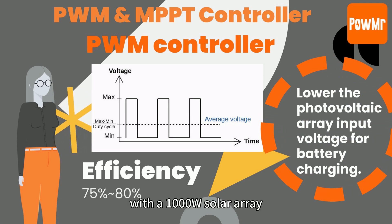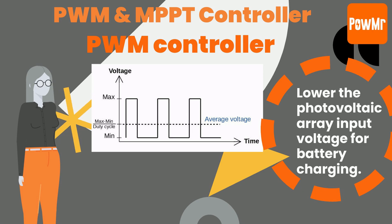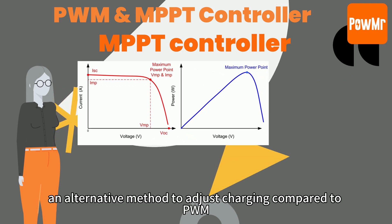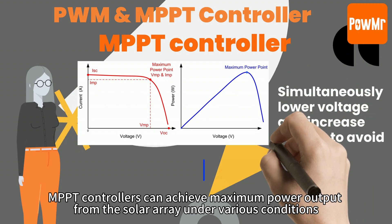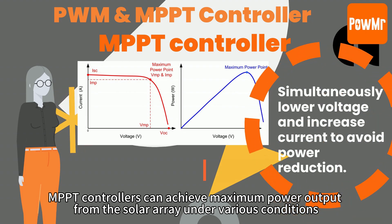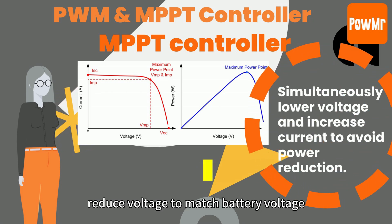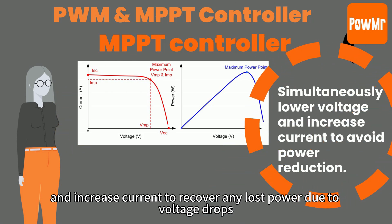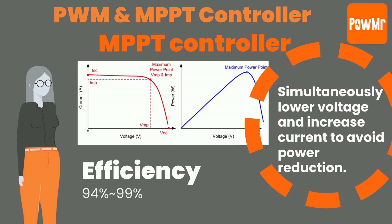For example, with a 1000W solar array, you might lose around 200W, making PWM controller efficiency range from 75% to 80%. MPPT stands for Maximum Power Point Tracking, an alternative method to adjust charging compared to PWM. MPPT controllers can achieve maximum power output from the solar array under various conditions. They accept higher voltage levels, reduce voltage to match the battery voltage, and increase current to recover any lost power due to voltage drops. MPPT controllers boast an efficiency of 94% to 99%.